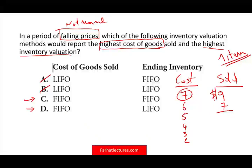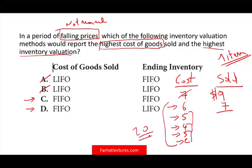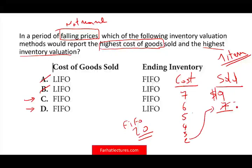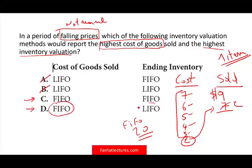If prices are falling and I use FIFO, the $7 is gone and I'm left with $6 + $5 + $4 + $3 + $2 = $20 ending inventory. If I use LIFO, last in first out, I sell the $2 and I'm left with $7 + $6 + $5 + $4 + $3 = $25. So LIFO gives me the highest ending inventory. Therefore in falling prices, FIFO gives the highest cost of goods sold and LIFO gives the highest ending inventory.